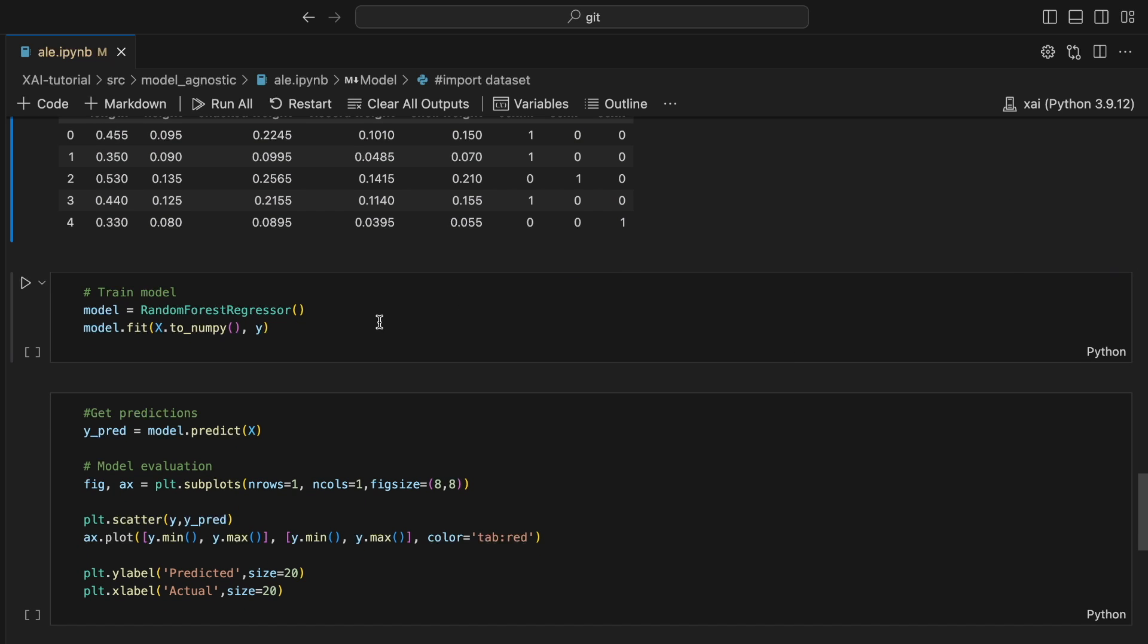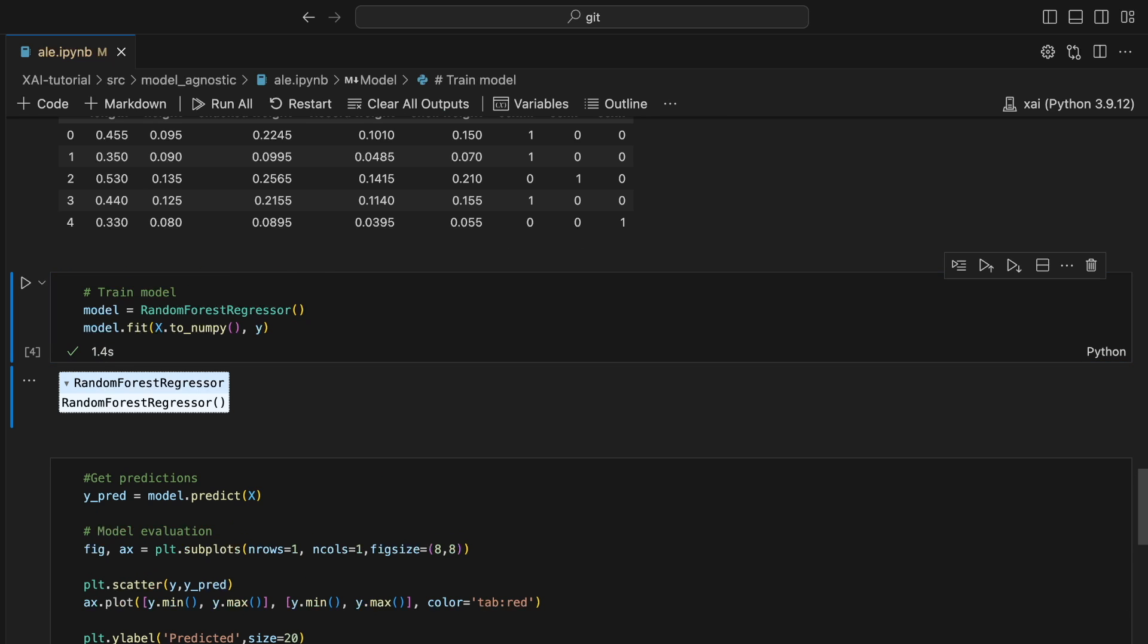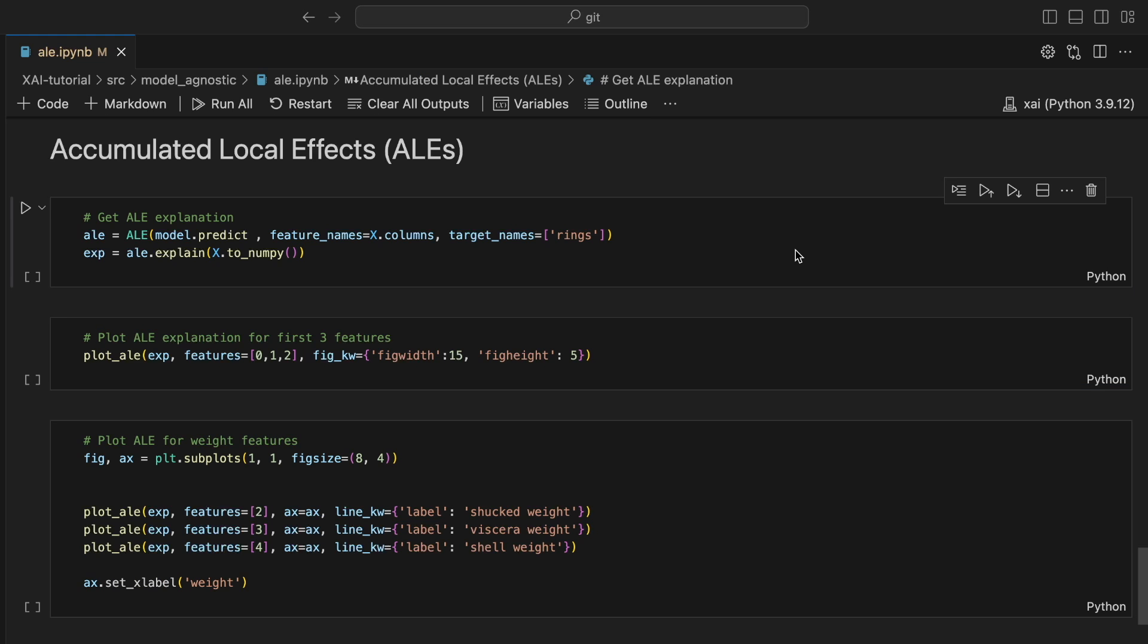We use this to train a model. Notice that when training the model, we convert the feature matrix to a NumPy array. This is to avoid a warning message when creating ALEs.